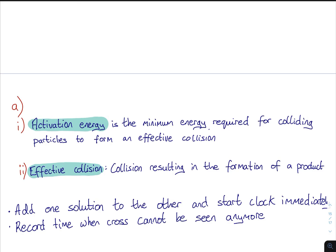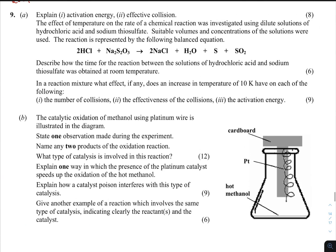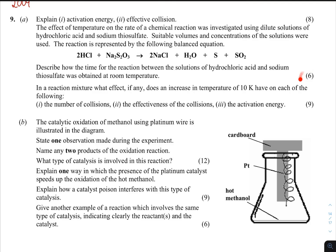Again, you're given thiosulfate and HCl and asked to describe how the time was taken for it. Very simple. You add one solution to the other, start the clock immediately, record the time when the cross cannot be seen anymore. There wasn't going to be that many marks for that because there was only six. You didn't have to talk about different concentrations or plotting graphs or whatever.